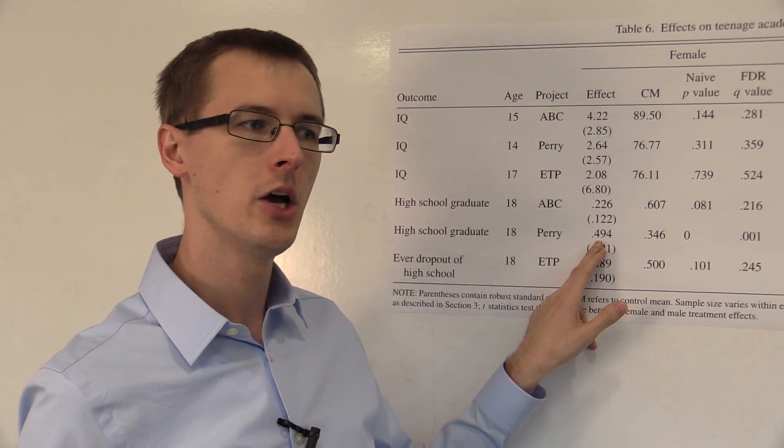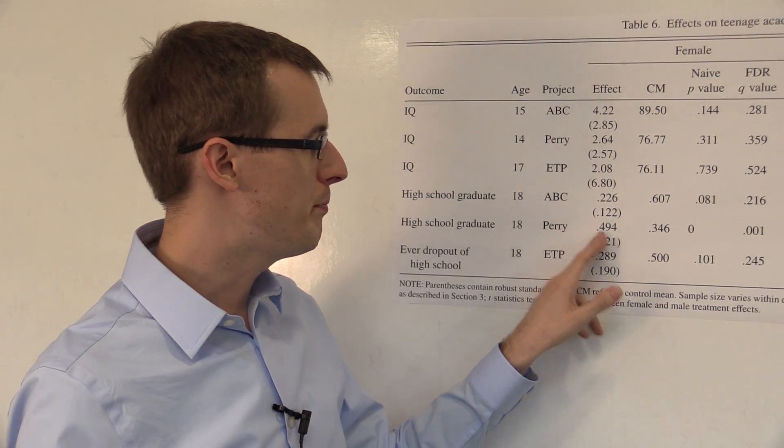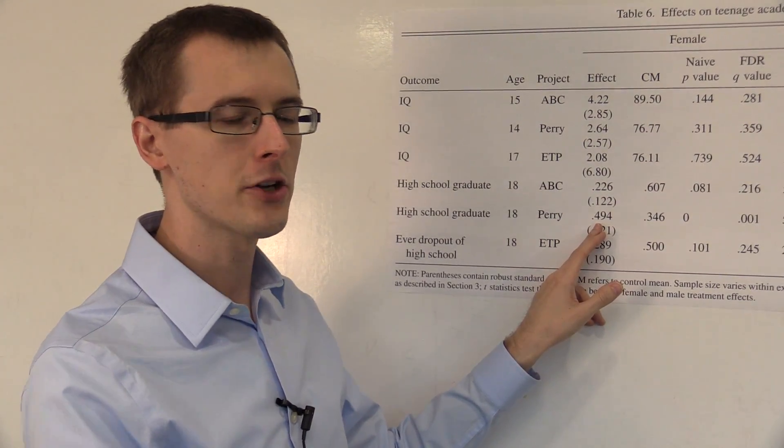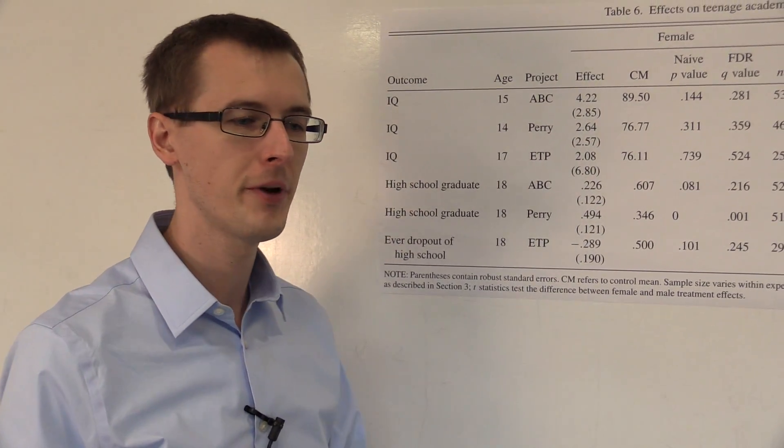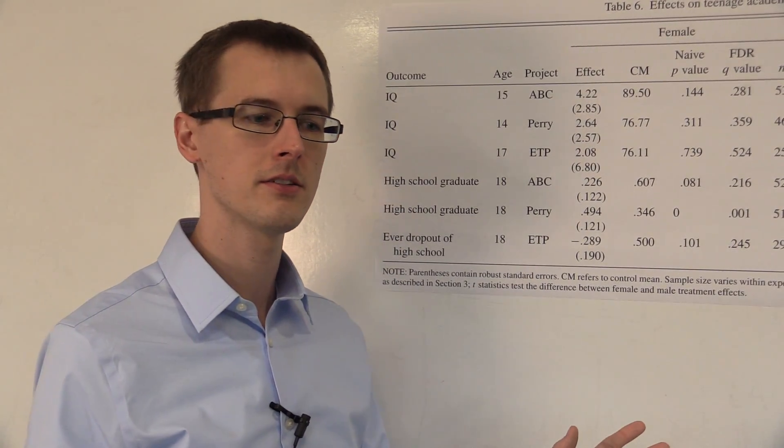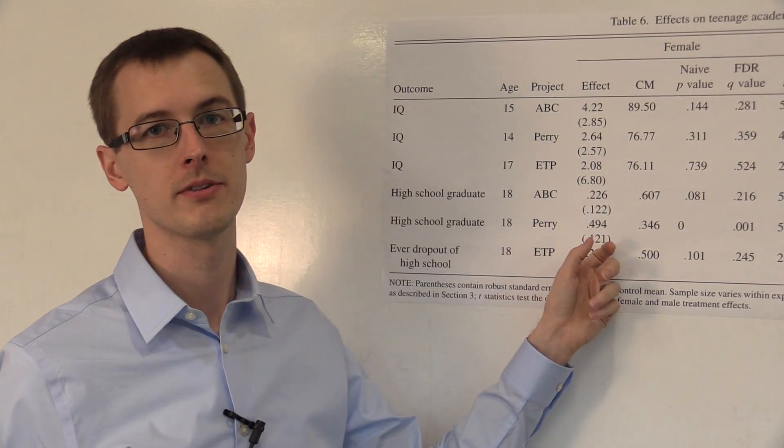If we ran the experiment again, we would again find that females had a big effect of increasing the percentage that they graduated from high school by going to preschool. If we used a totally new set of kids, not the same kids in this data, we would still see this number. That's the conclusion.